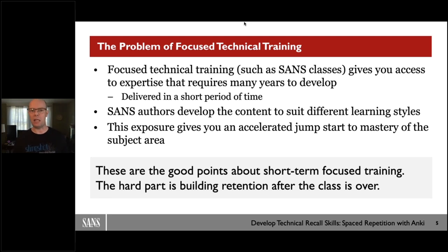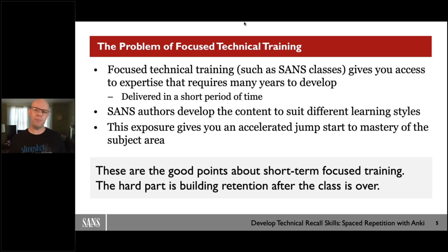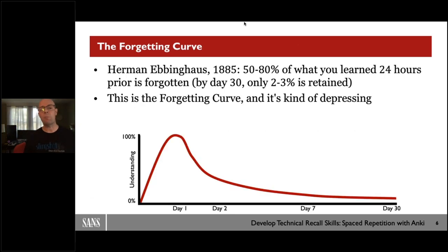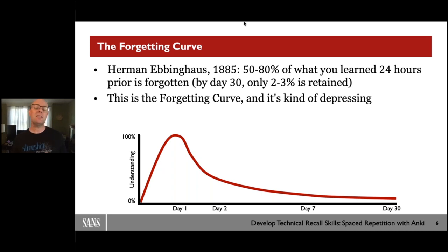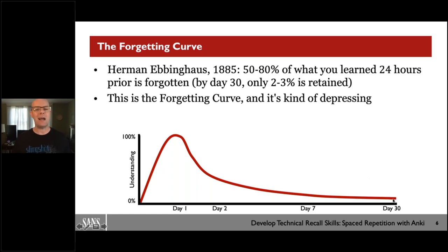This is the reality of any kind of training. As humans, if we learn something and then don't apply it, we're going to forget it. This is backed up in science. Herman Ebbinghaus, a philosopher back in 1885, did some studies. What he realized was that when you learn something, 24 hours later — if you have not looked at it again — you will forget 50% to 80% of what you learned. By day 30, you only retain about 2% of what you learned. This is the forgetting curve and it's depressing.